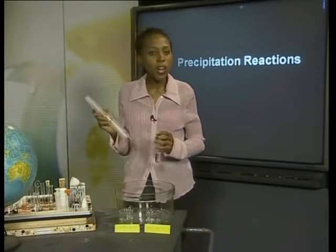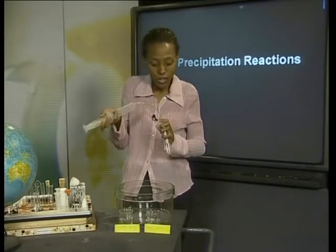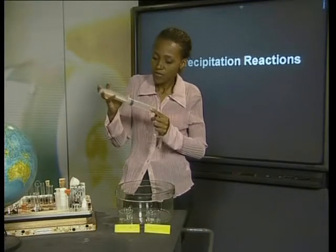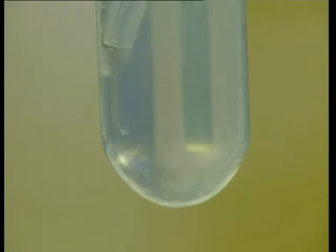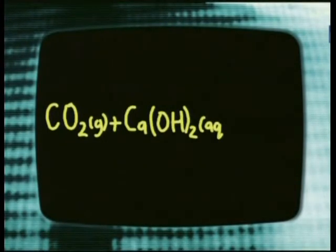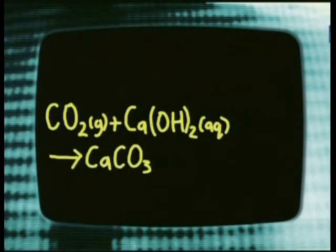Do not become confused between precipitation and a precipitation reaction. Precipitation is when condensed water in clouds falls to the ground as rain, snow or hail. A precipitation reaction is when a solid is formed in a liquid. I am going to bubble carbon dioxide gas through a solution of calcium hydroxide — observe what happens. A milky suspension of insoluble calcium carbonate forms. A precipitation reaction has taken place. The calcium and hydroxide ions in solution have reacted with the carbon dioxide gas and formed the insoluble salt calcium carbonate and water.